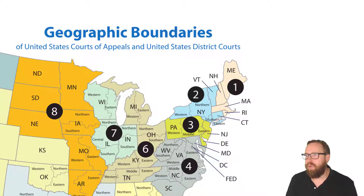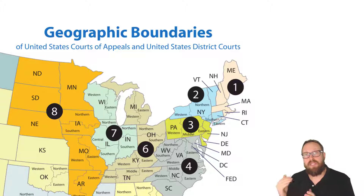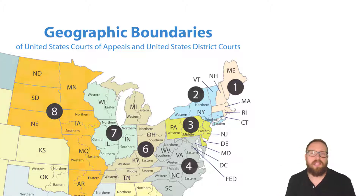So that means when we're researching and we want to find binding authority, we're looking for Sixth Circuit cases. And then above the Sixth Circuit would be the U.S. Supreme Court. So we're looking for Sixth Circuit cases and U.S. Supreme Court cases. Those would be the two binding ones.